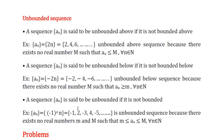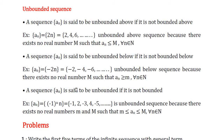Now we define unbounded sequences — sequences which are not bounded. There are three types. A sequence {aₙ} is said to be unbounded above if it is not bounded above. For example, aₙ = 2n gives 2, 4, 6, and so on. It is unbounded above because there exists no real number M such that aₙ ≤ M for all n belonging to N. For any chosen M, there will always be an element exceeding it.